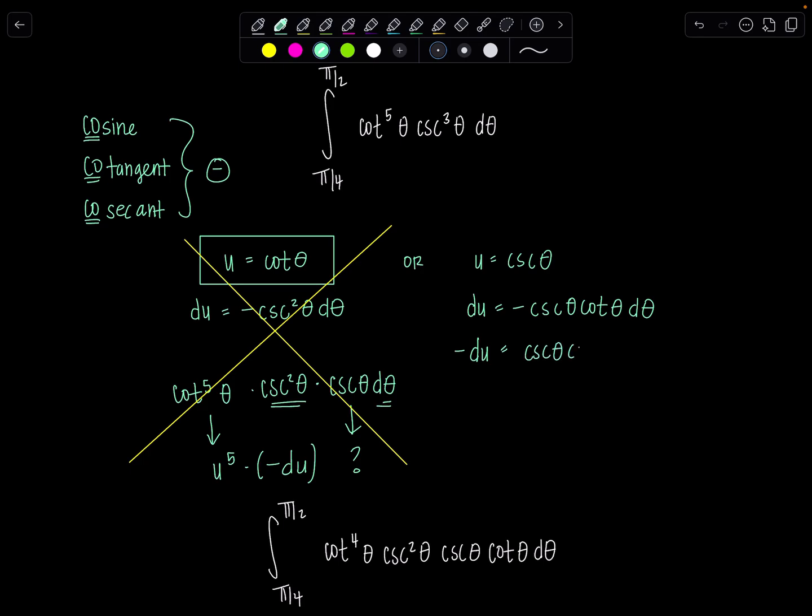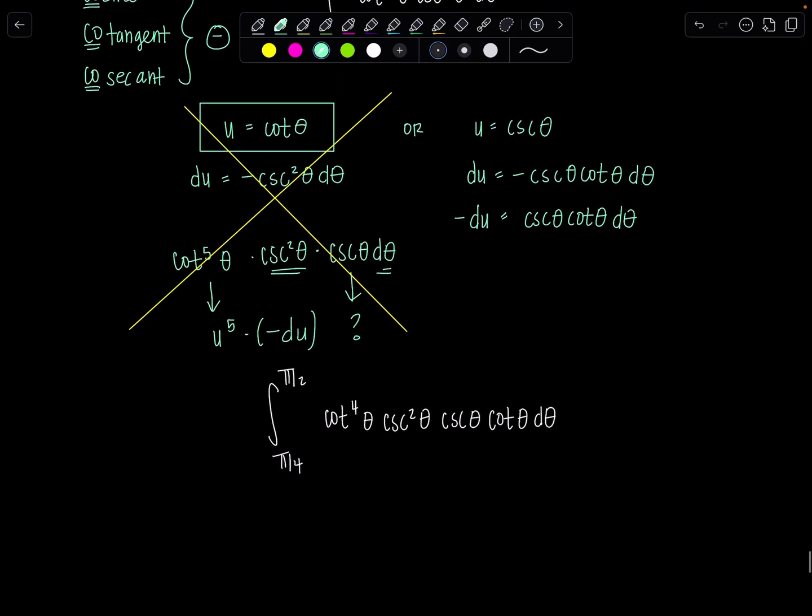So are we ready to make our u-sub? This cosecant squared theta is going to be u squared. Cosecant theta cotangent theta d theta is going to be negative du. But what do we do with this extra cotangent to the fourth theta? I have to write everything in terms of u, and u is cosecant theta. So now it's time to bust out one of your Pythagorean identities.